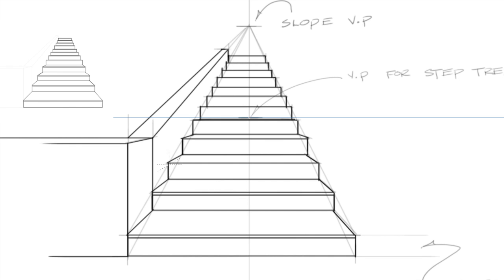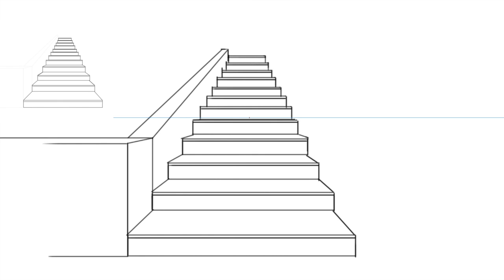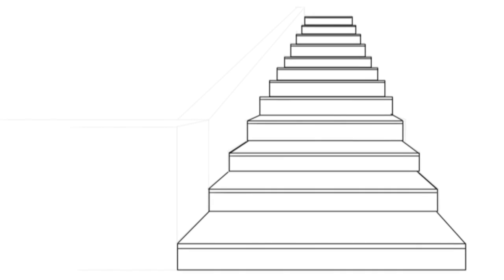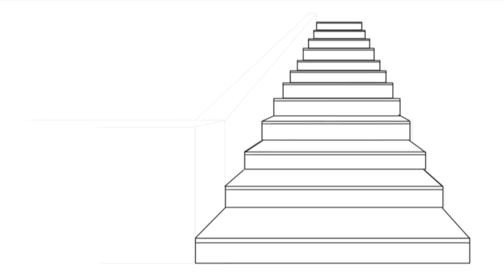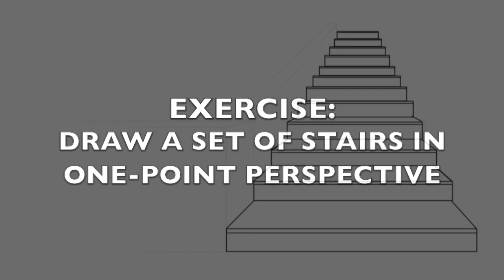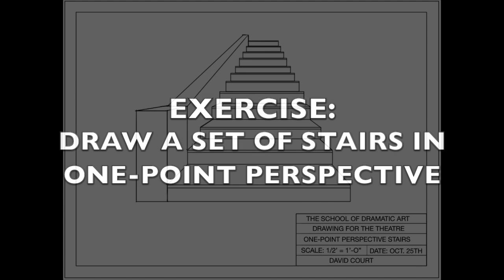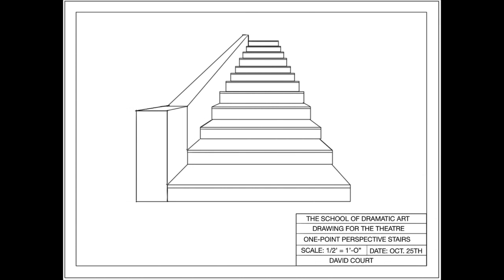Now I'll add an extra horizontal line on each step to indicate bull nosing or the thickness of each tread. One of your exercises this week is to draw a set of stairs in one-point perspective. Include a border and a title block. You will find a copy of this handout in Blackboard after this video for your reference.